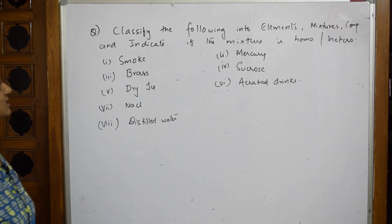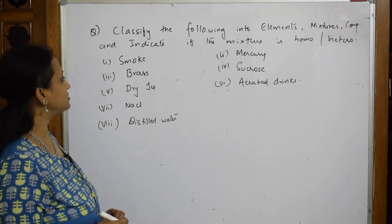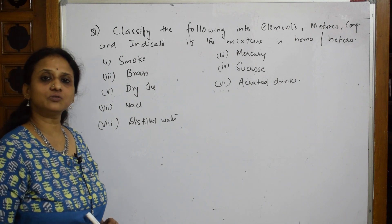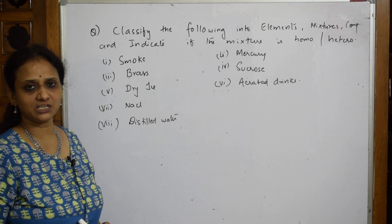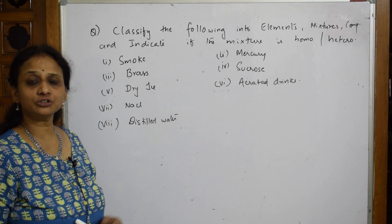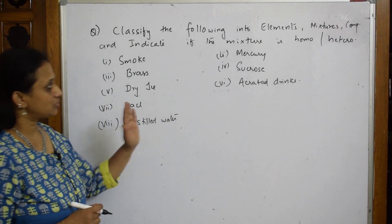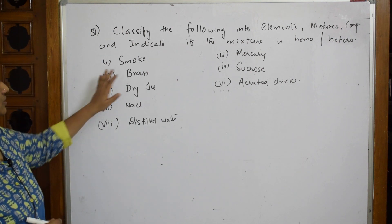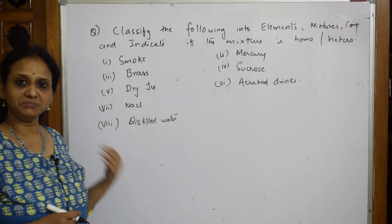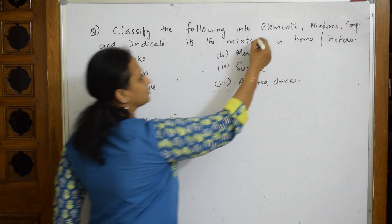Here they give us: classify the following into elements, mixtures, and compounds, and indicate if the mixture is homogeneous or heterogeneous. We know we've divided mixtures into homo and hetero, and pure substances into elements and compounds. So now I need to find out whether the given examples are elements, mixtures, or compounds — three things to check.